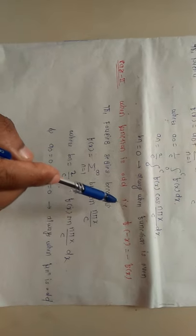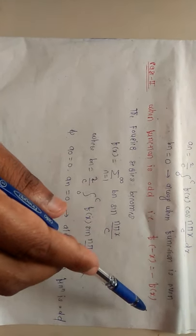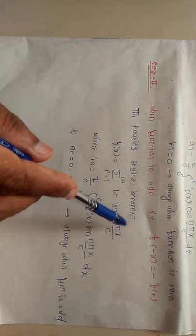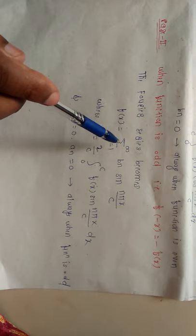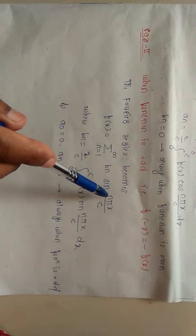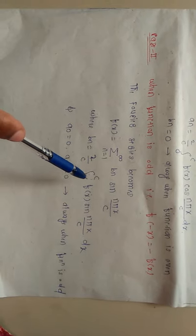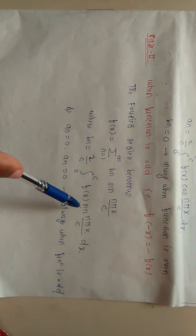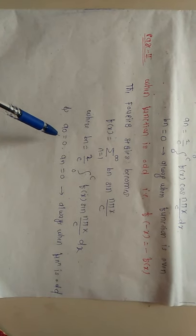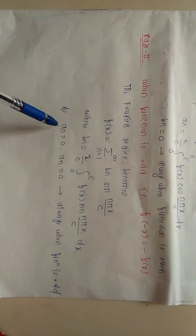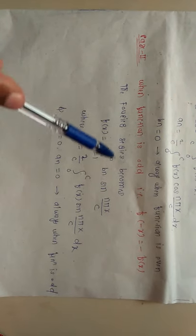The next case is when the function is odd, that is f(-x) = -f(x). The Fourier series becomes f(x) = Σ(n=1 to ∞) bₙ sin(nπx/c), where bₙ = (2/c) ∫₀^c f(x) sin(nπx/c) dx. In that case, the values of a₀ and aₙ are always 0.